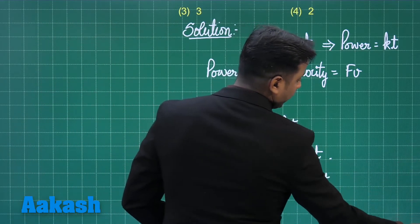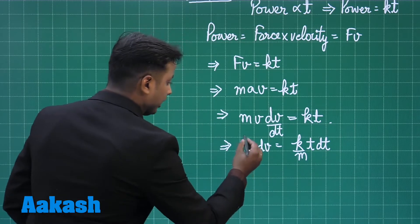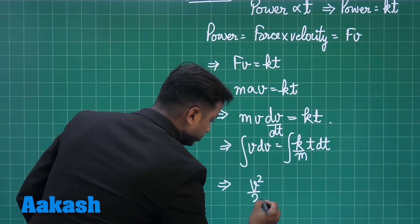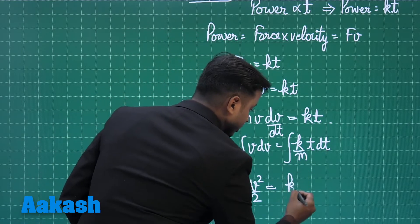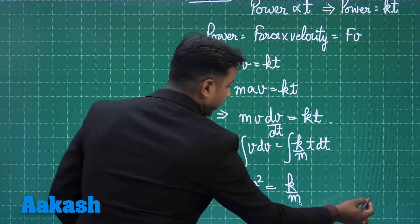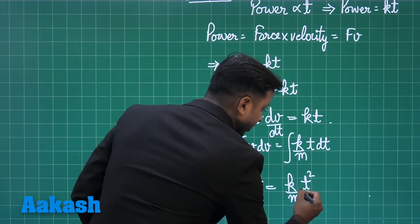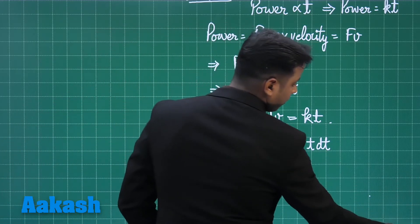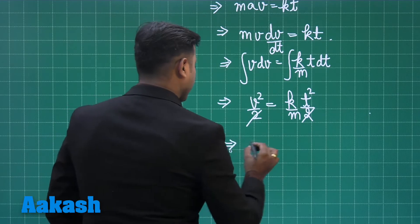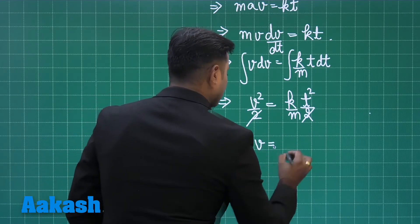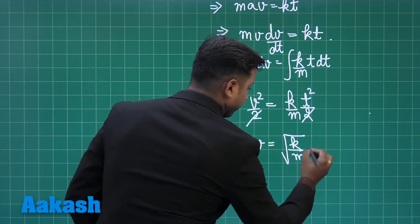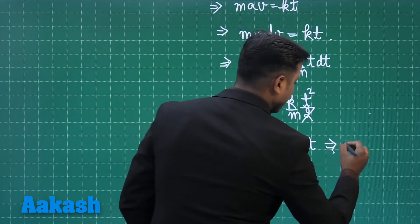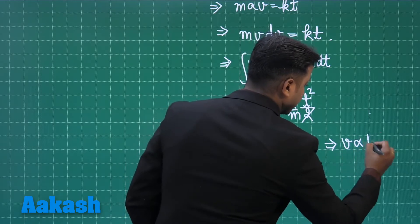Integrating both sides: v²/2 = (k/M)·(t²/2). The factors of 2 cancel, giving us velocity equals √(k/M) times t. So ultimately, velocity is directly proportional to time.